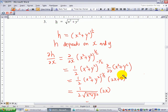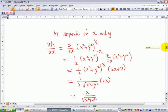So as you simplify, you get 1/(2√(x² + y²)) times 2x. After the cancellation, I have x/√(x² + y²).